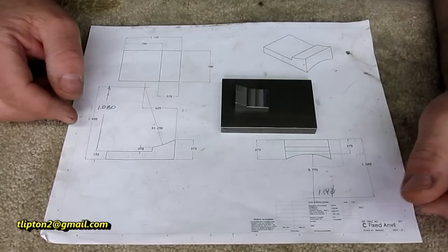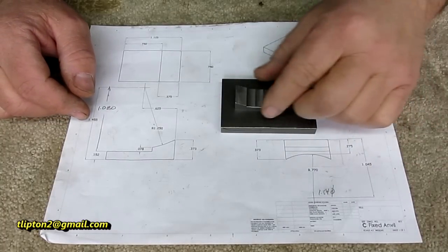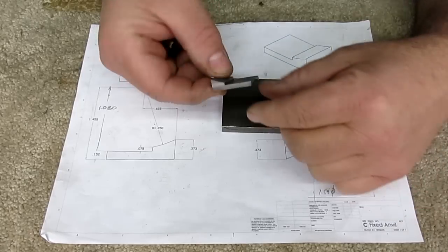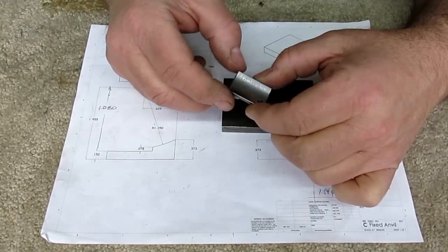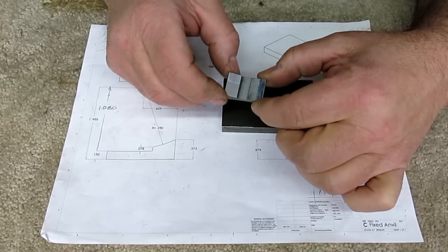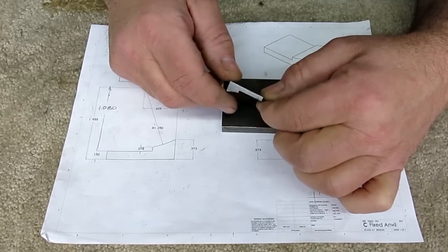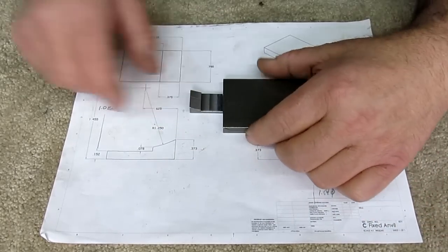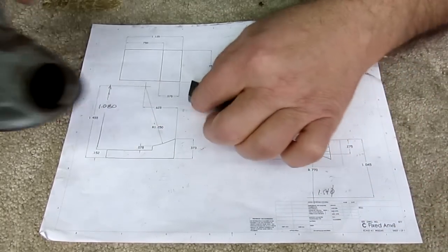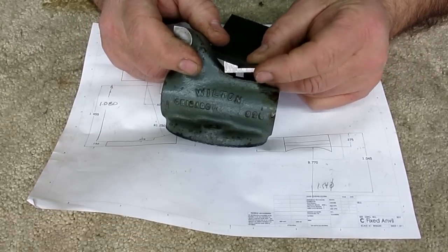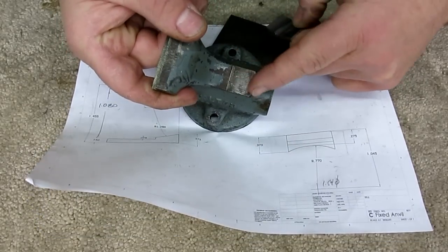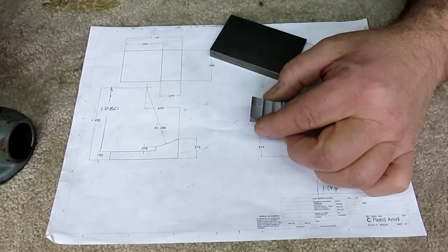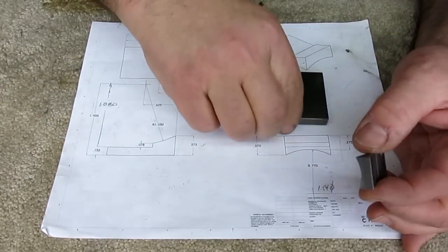Alright boys, we're back on some baby bullet action here today. What we're doing is this little fixed anvil part. I already did one, I almost wasn't going to film this but let's go ahead and do it. This is this little bit back here that makes this little anvil area here, and yes I made it separately.